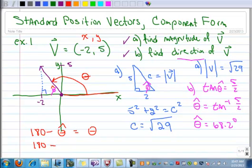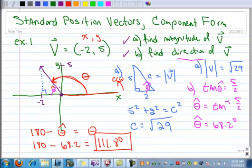So that's 180 minus 68.2. And when we do that, we get 111.8 degrees. So the actual direction of this vector, because I always measure from zero, the zero on the x positive, in the counterclockwise direction. So my actual direction of the vector right there is 111.8 degrees. So that's how you calculate magnitude and direction of a standard position vector.